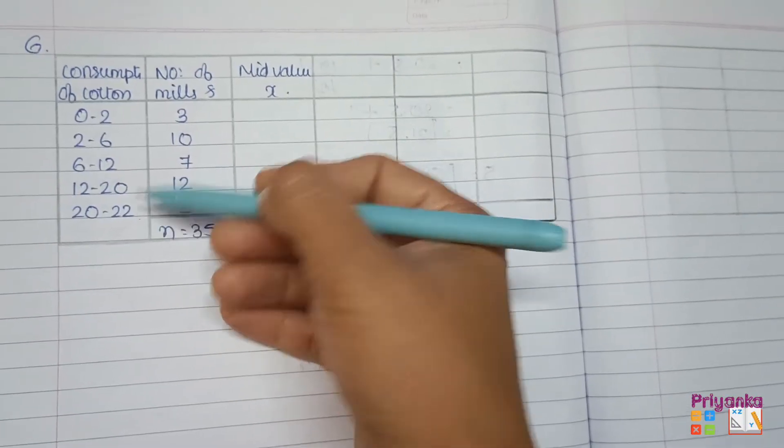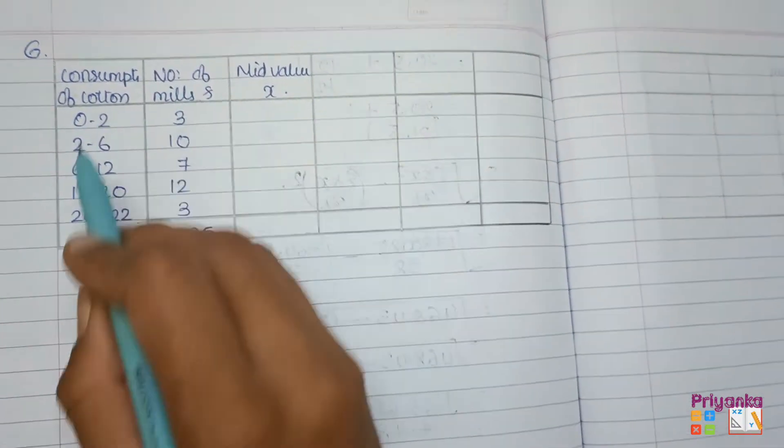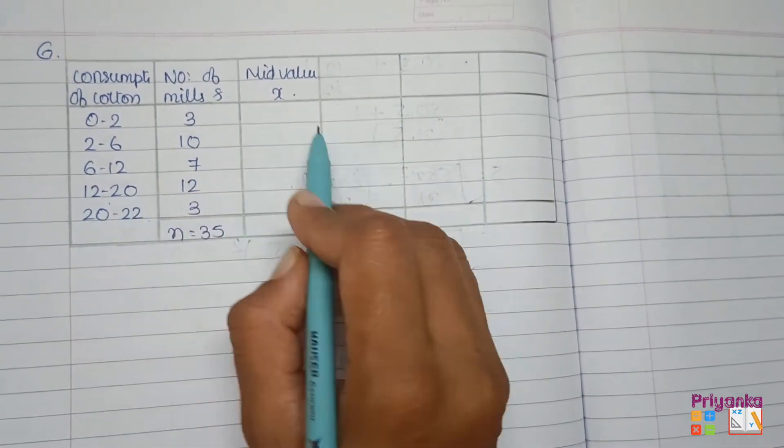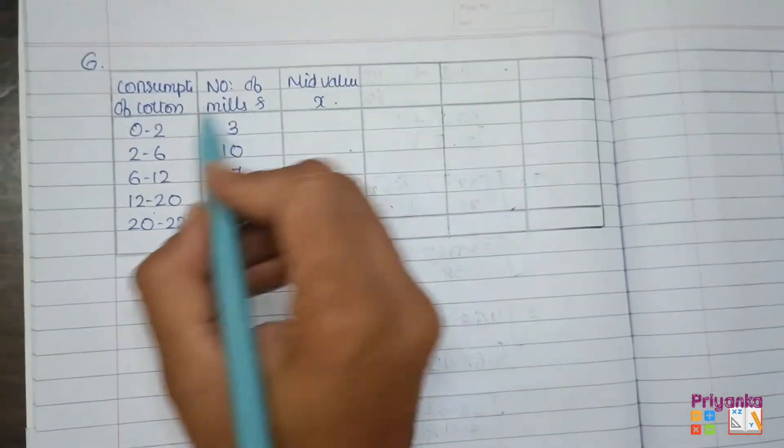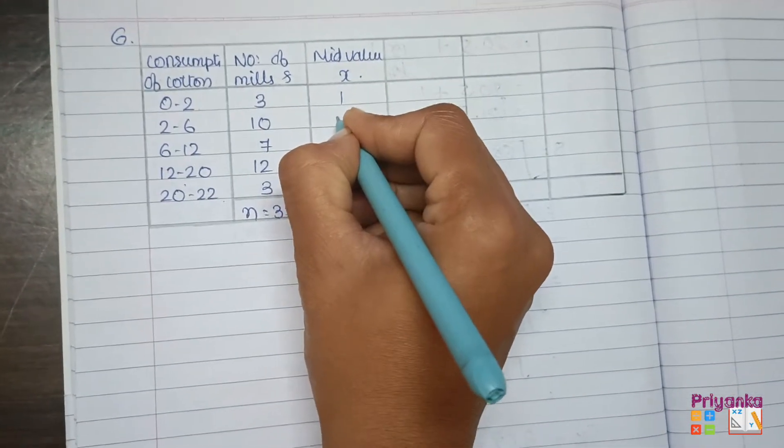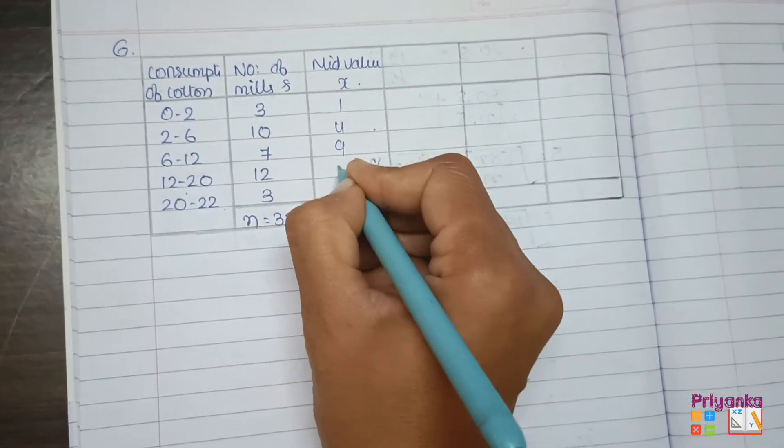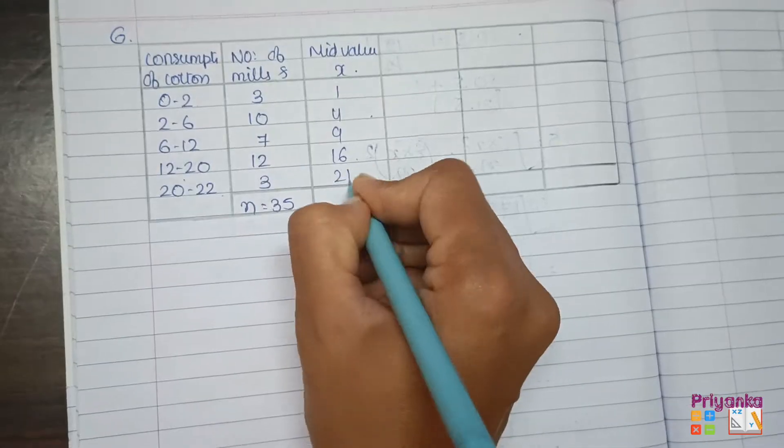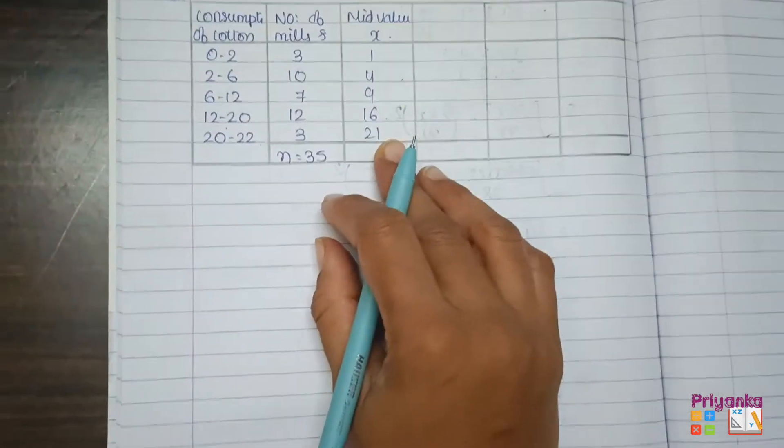Zero to two here, two to six here, so equal distance nahi hai. So we will again find out median. Since frequency is continuous frequency distribution, first find out the mid value. Zero plus two divided by two will be one, two plus six divided by two is four, and so on.